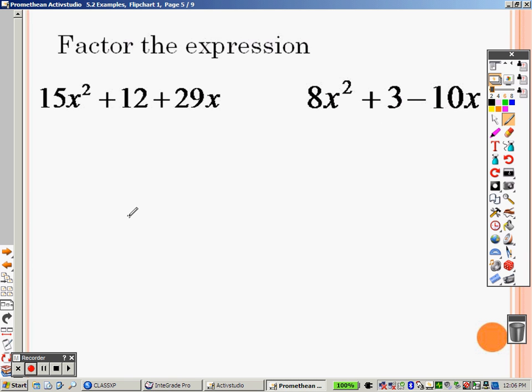Alright, so now you still can factor these, but here's the problem. The problem with these is they aren't in order. So you have to make them in order first, or we can't factor these. So when I rewrite this in order, in standard form, it's x squared first, then it's 29x, and then it is 12.